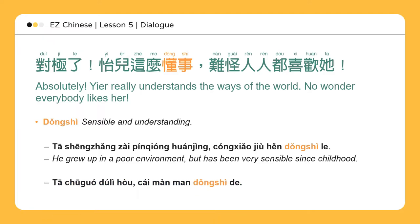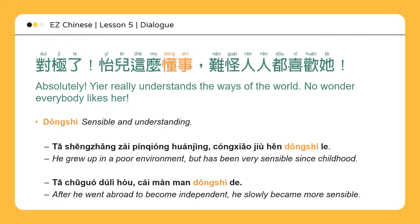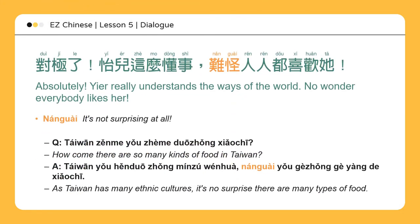出国 means go abroad; 独立 means to become independent. 他出国独立后，才慢慢懂事的。After he went abroad to become independent, he slowly became more sensible. 难怪 means it's not surprising at all. 台湾怎么有这么多种小吃？台湾有很多种民族文化，难怪有各种各样的小吃。As Taiwan has many ethnic cultures, it's no surprise there are many types of food.